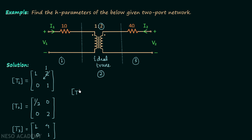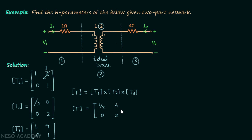To find the T parameters of the overall network we multiply T1 × T2 × T3. After multiplication, the overall T parameters matrix is [1/2, 4; 0, 2]. This gives the ABCD equations: V1 = (1/2)·V2 − 4·I2 and I1 = 0·V2 − 2·I2.